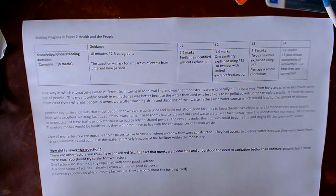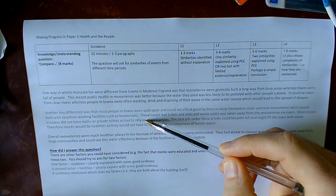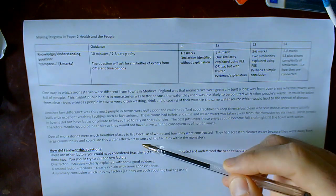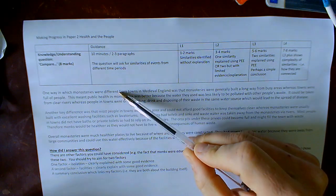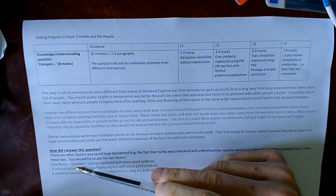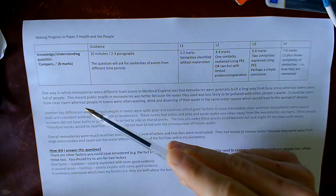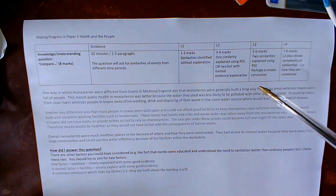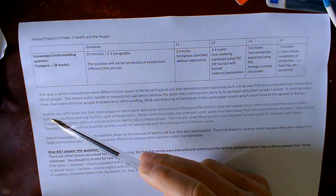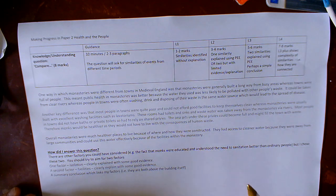The thing you are trying to do is you're trying if possible to look for at least one similarity, ideally two similarities or in this case differences, and then possibly some sort of summary which links the two together. So here's my first one. One factor. And you'll get this in colour. I don't have a colour printer but you'll see it in colour. So this factor. One way in which monasteries were different from towns in medieval England was that monasteries were generally built a long way from busy areas whereas towns were full of people. Hopefully that's clear that that's my factor that shows difference.